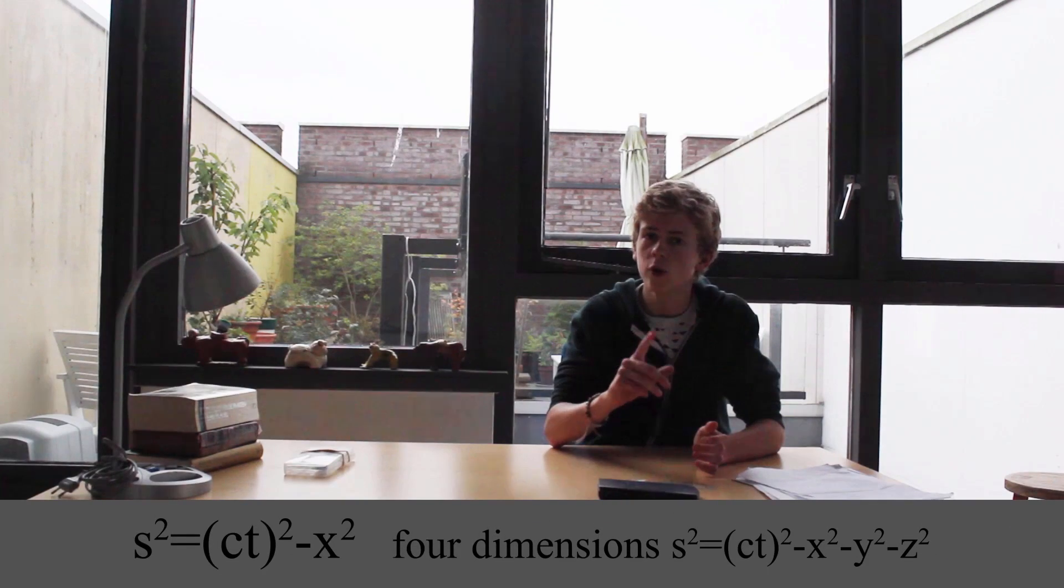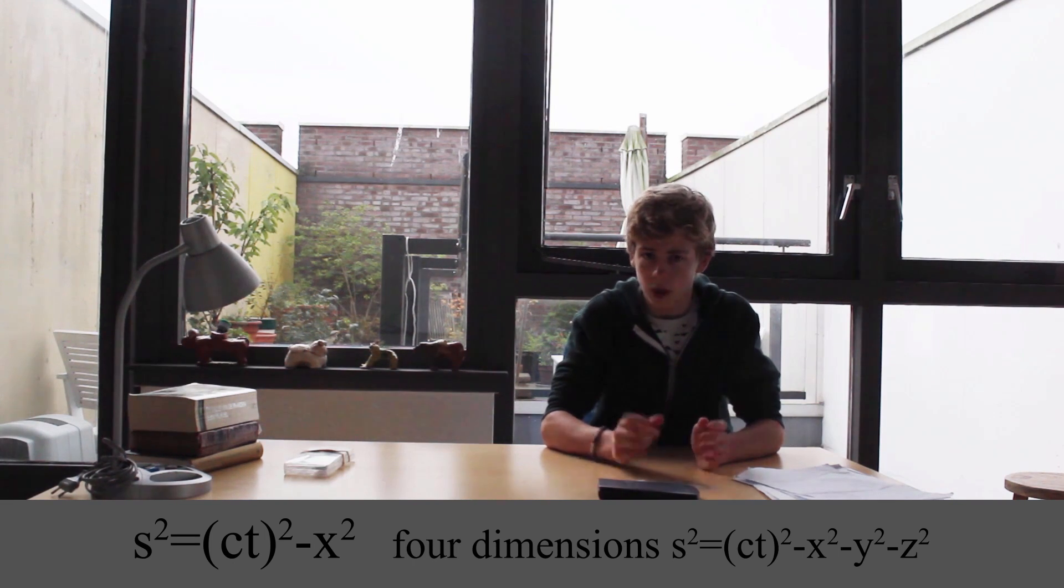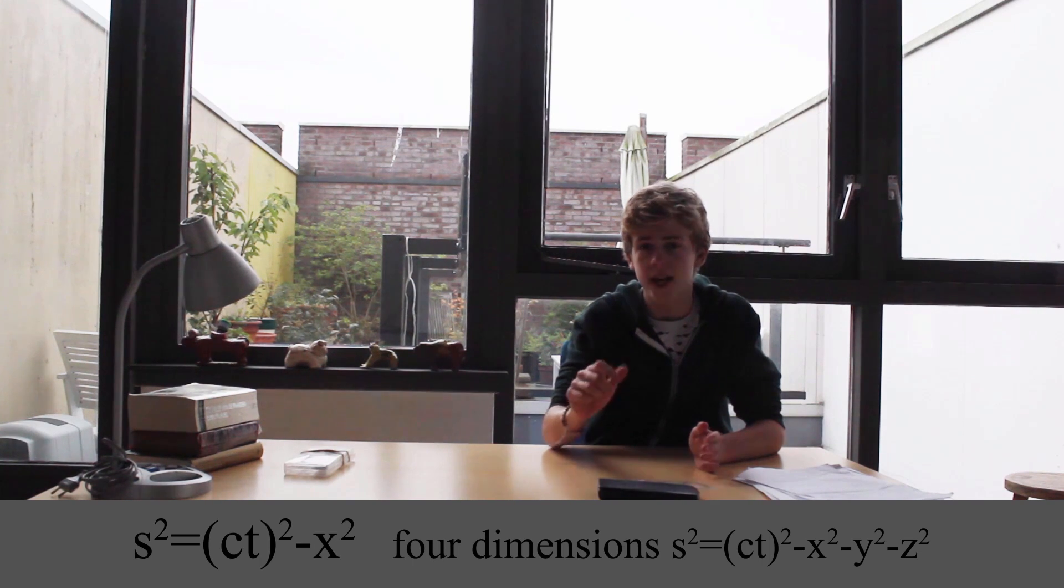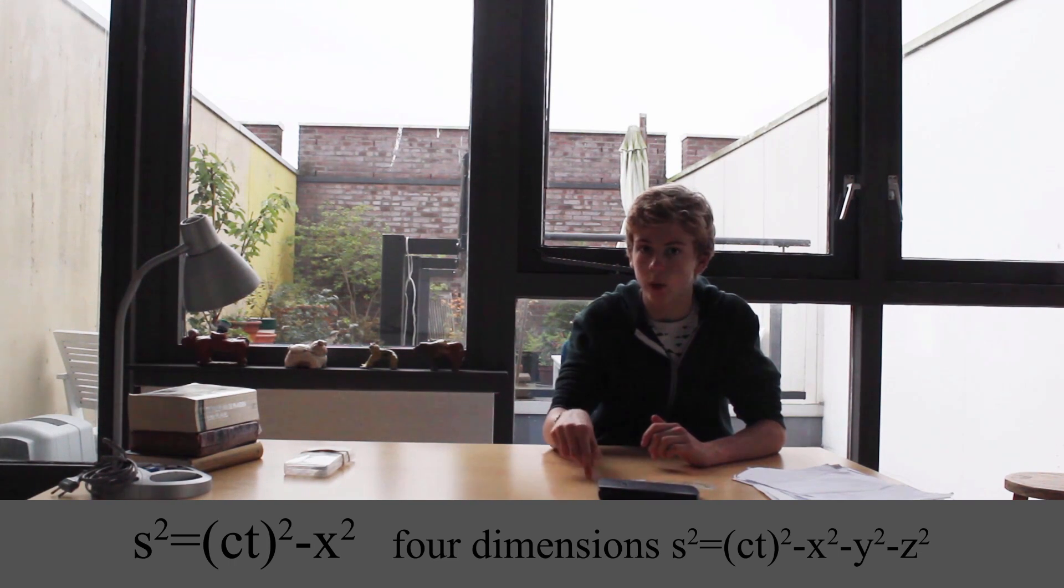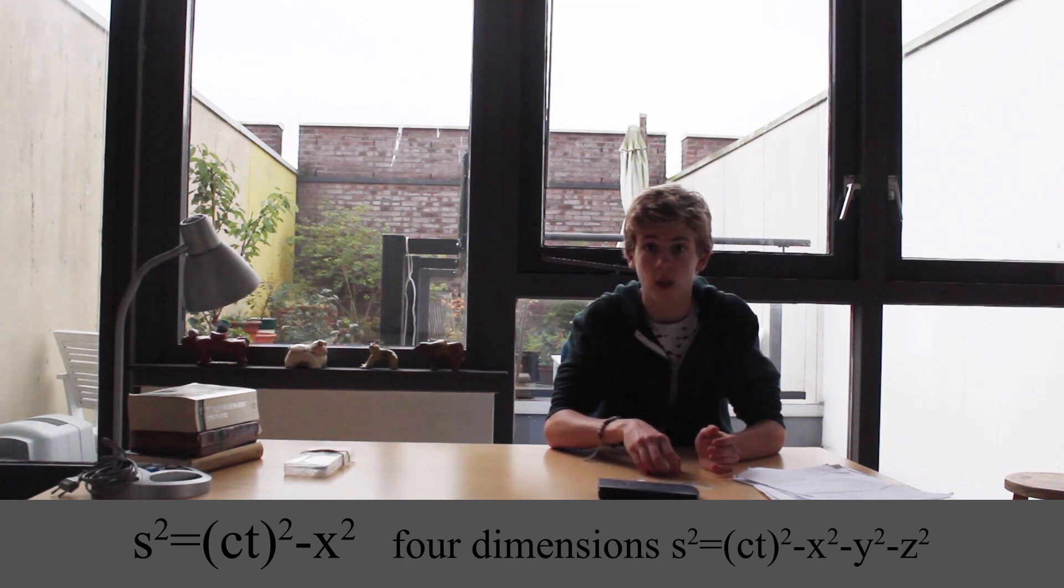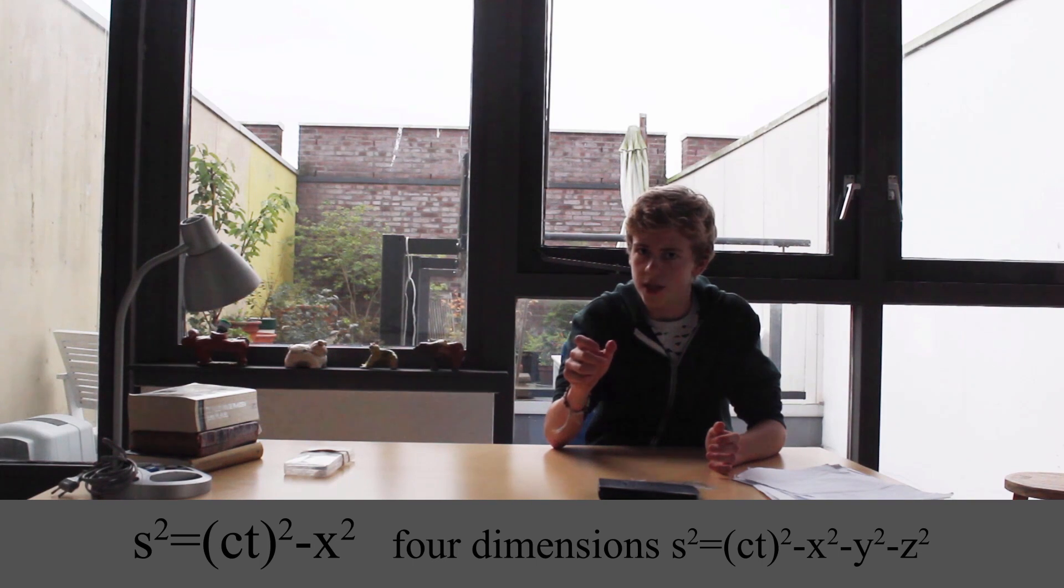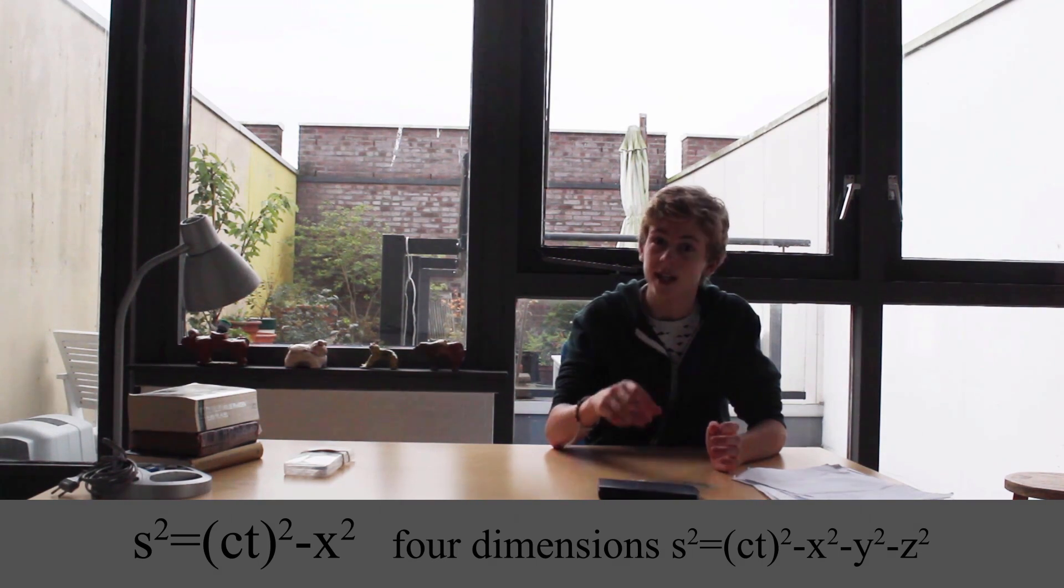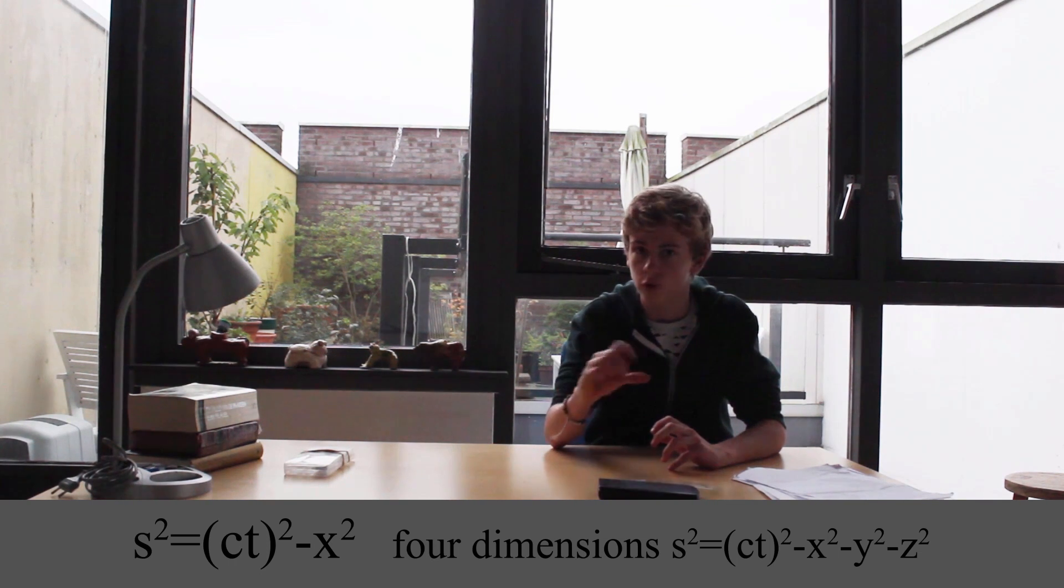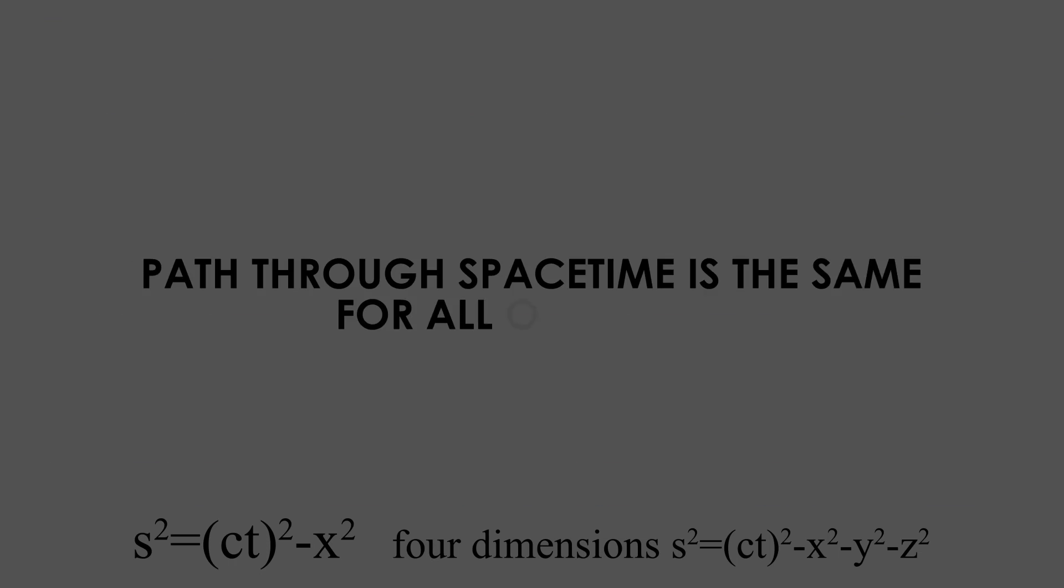But there is one value everybody has to agree on, which is s squared equals ct squared minus x squared. Whatever observation-based value someone puts into this equation, s squared will always be constant. And as you can see in the equation, s is a measure of distance, while s here is the distance of the path through space-time. The path through space-time is the constant value for all observers.